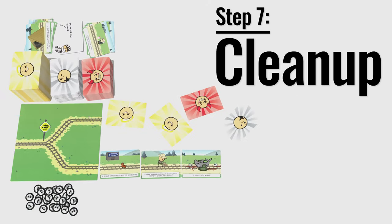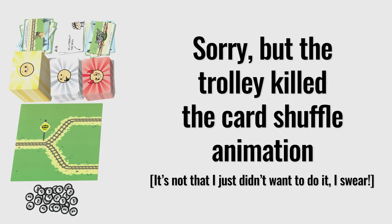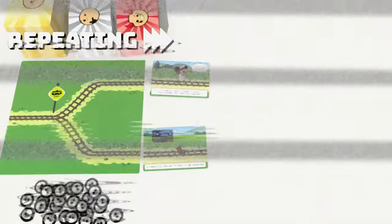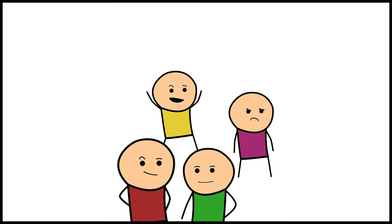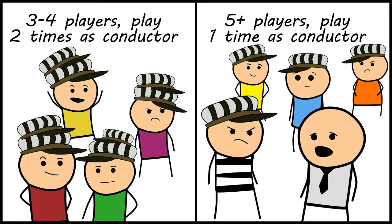The last step is clean-up. All cards played during the round are discarded into their respective decks. If the decks were to ever run out, shuffle the discard pile to create a new deck. The player to the left of the conductor becomes the new conductor. Rotate the board so that the single train line points at the new conductor, dividing the players into two new teams. In this way, the teams will be different each round. Repeat the round with steps one to seven until each player has been the conductor twice in a three or four player game, or once if more than four players are playing.